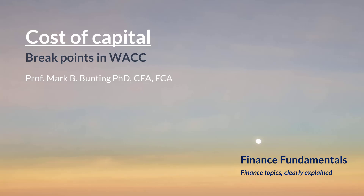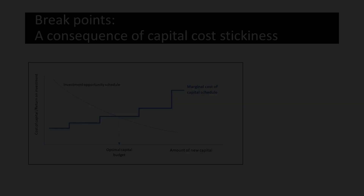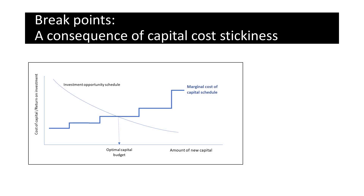This presentation is all about how companies grow. Theory and evidence suggests that two opposite effects occur as a company adds new projects, funded by increasing its capital base. Firstly, the return on each new project is lower than the one before, in a pattern of diminishing returns referred to as the investment opportunity schedule.